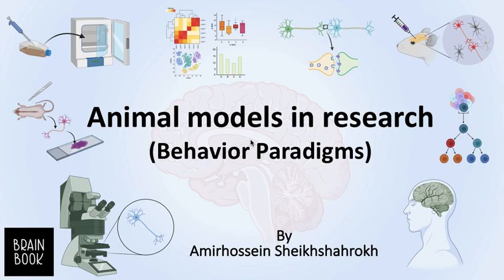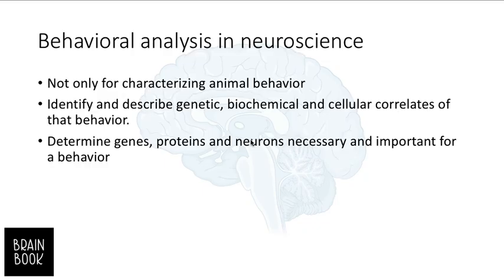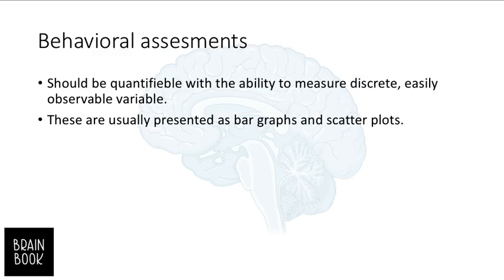Hi everybody, hope you are doing fine. Welcome to the Brain Book channel, I'm Amir. In this video I want to talk about animal models in research, specifically considering their behavior paradigms. Behavioral analysis in neuroscience is not only for categorizing animal behavior, but also to identify and describe the genetic, biochemical, and cellular correlates of that behavior. It also determines genes, proteins, and neurons necessary and important for a behavior.